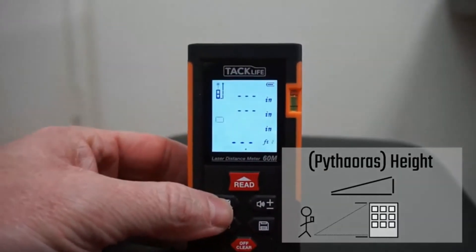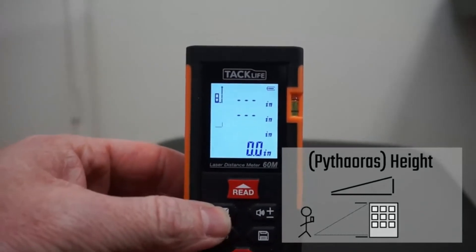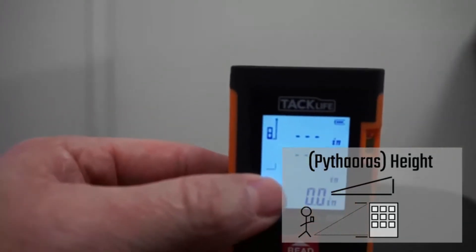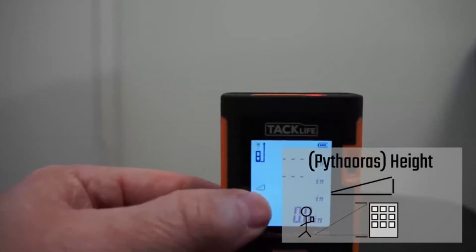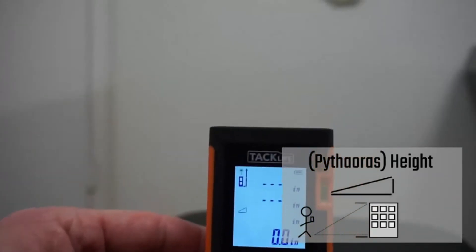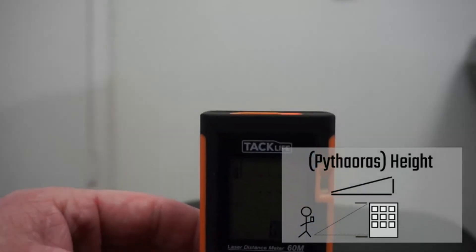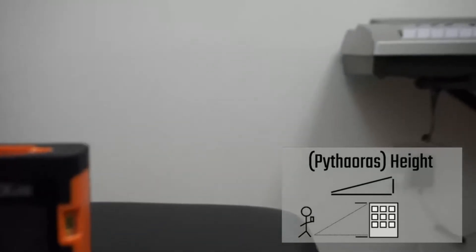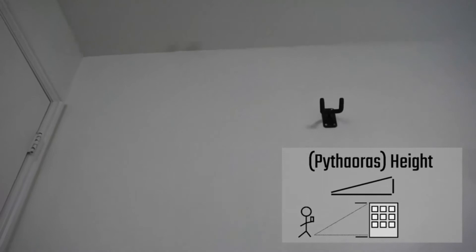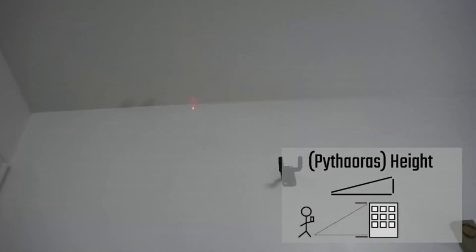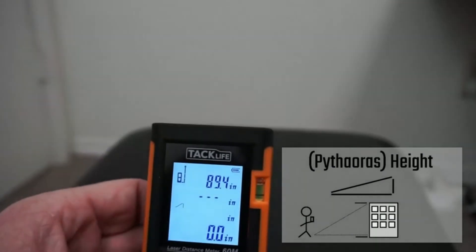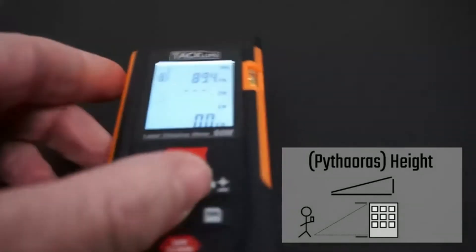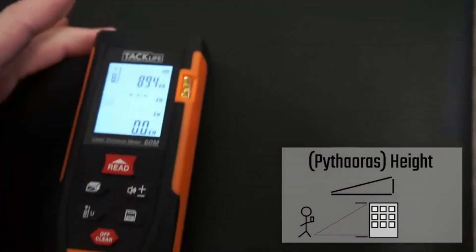Now I'm going to show you how to do one of the Pythagorean functions to measure the height of a building. Look for this icon where the top of the triangle is blinking — that means the first measurement we want to do is the top of the building. We're going to pretend the wall in here is the top of the building, so I want to measure up to where the top would be. I get this ready for reading, point the laser at the top of my imaginary building, press the button — we've got 89.4.